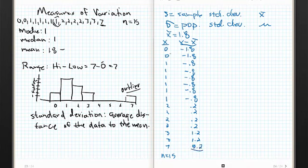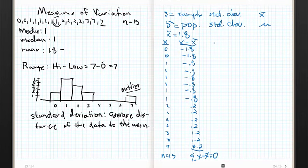You might say: why don't we just take the average of these? The problem is the sum of (x minus x-bar) is always zero — that's a mathematical fact. So that doesn't work. The way to get rid of the negatives — without using absolute value, which is called the absolute mean average — is to square each deviation.